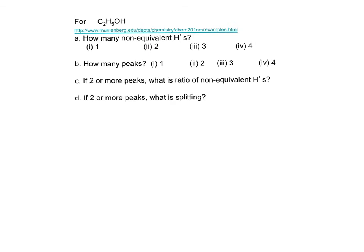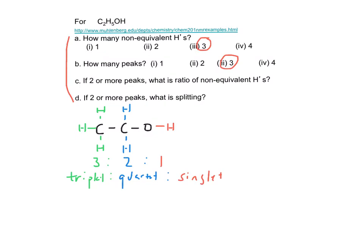Let's practice. Stop the video and answer these four questions and predict the proton NMR spectrum for ethanol. Looking at the structure of ethanol, the different colored protons show the equivalent and non-equivalent protons. The ratio is 3 to 2 to 1, and here's the splitting.